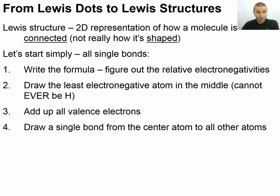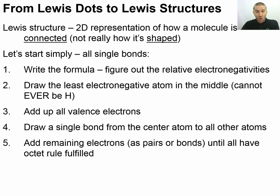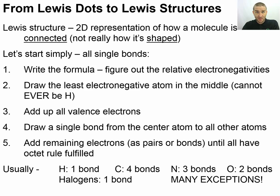Could those bonds be double or triple? Absolutely — we don't know that yet, but we'll figure it out by asking what strategy this molecule would use to optimize where the electrons are and get the most stability. Now draw in all remaining electrons as electron pairs, filling octets until everything is fulfilled. If you run out of electrons partway through, that tells you that you're going to have to make a double bond somewhere.